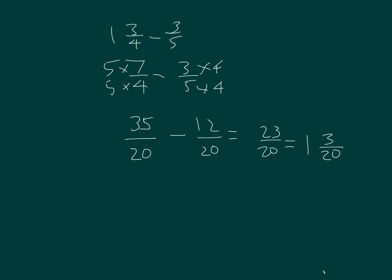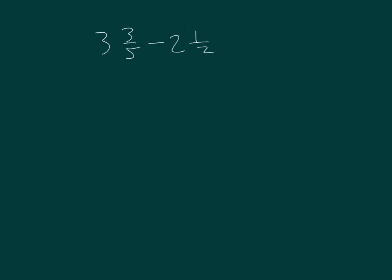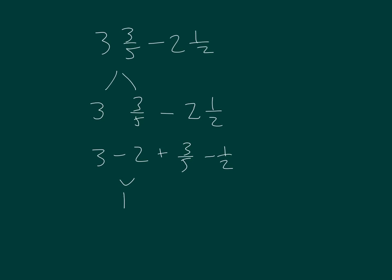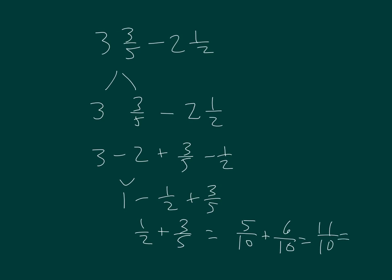So there are some different ways that we can solve those problems. How would you go about solving this problem? You may break this apart into three and three-fifths, where we're subtracting two and a half. That'd be three minus two, plus three-fifths minus one-half. Three minus two is one, minus a half plus three-fifths. One minus a half is a half, so it's a half plus three-fifths. Name them as tenths: five-tenths and six-tenths, which equals eleven-tenths, which equals one and one-tenth.